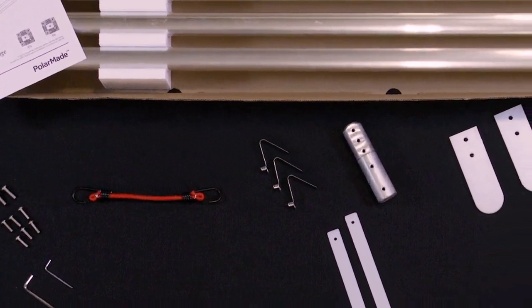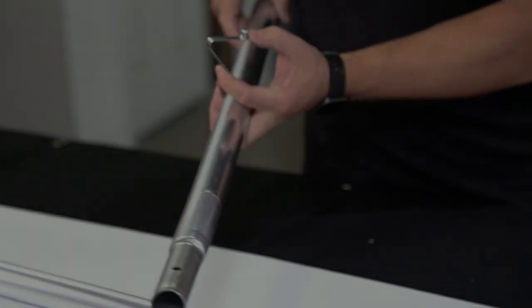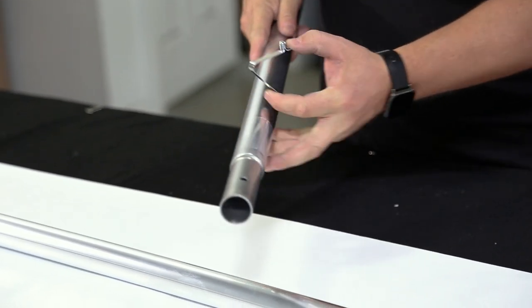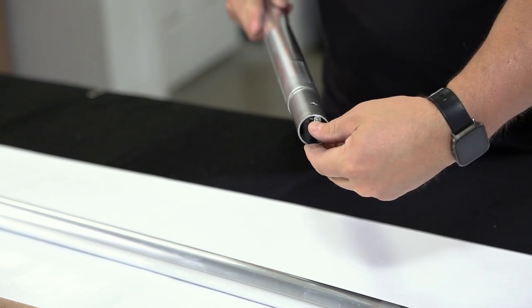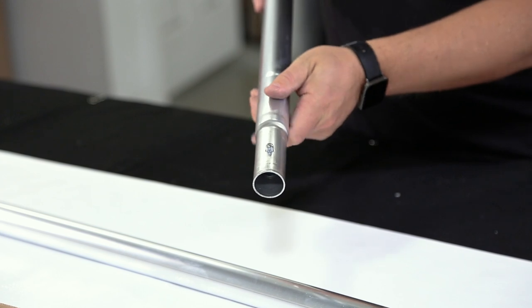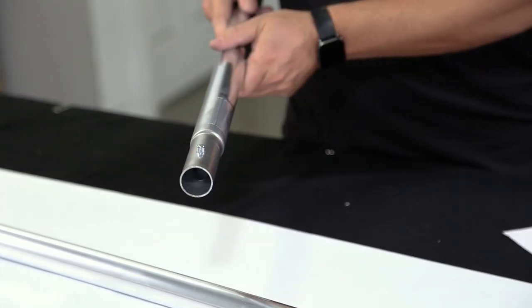The extension poles are held in place using quick connect snap springs. To install the snap springs, insert the angled end of the spring into the end of the pole extension that has the drilled hole. Push the spring into the pole until the snap button pops out of the hole. Push the snap button several times to make sure it moves freely. Repeat this step with the other extension poles.